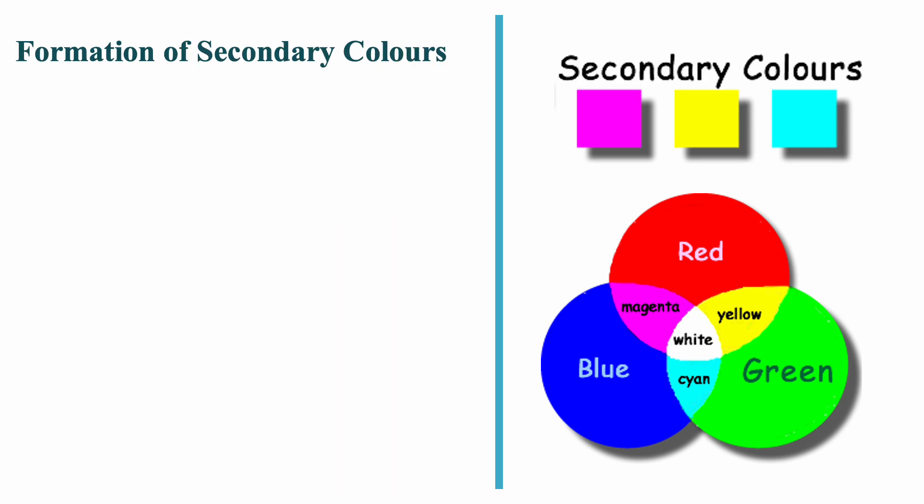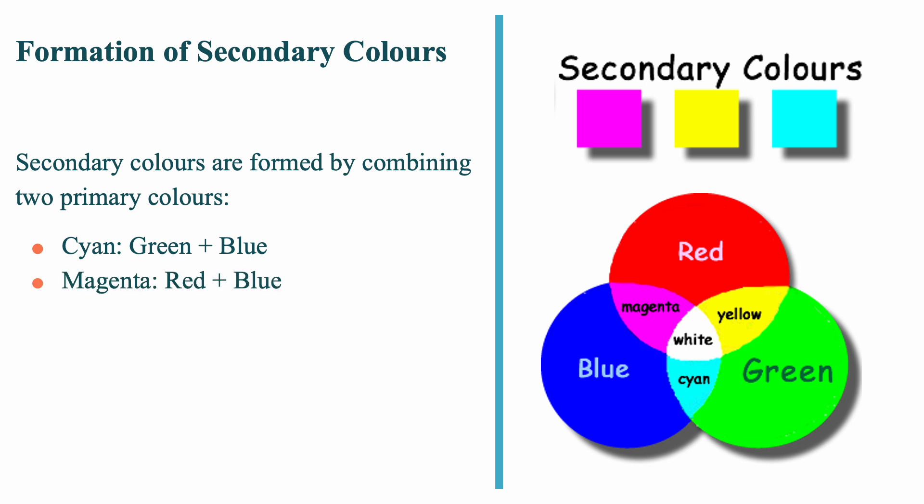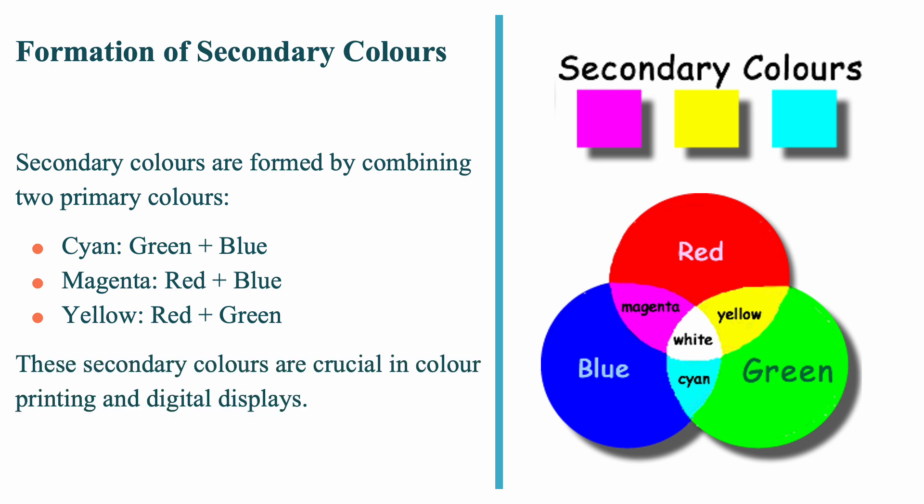By mixing two primary colors, we get secondary colors. For example, green plus blue gives cyan, red plus blue gives magenta, and red plus green gives yellow. These secondary colors are very important, especially in printing and digital displays, where they help produce the full range of colors we use every day.